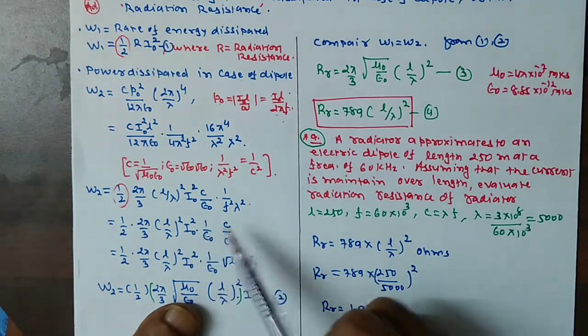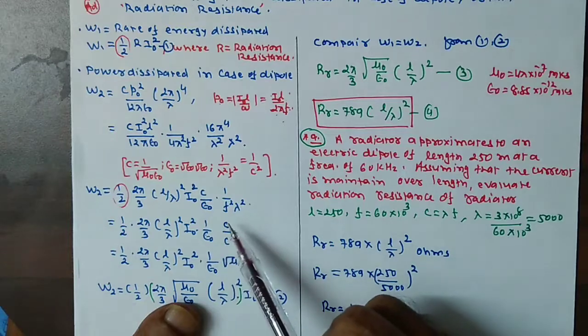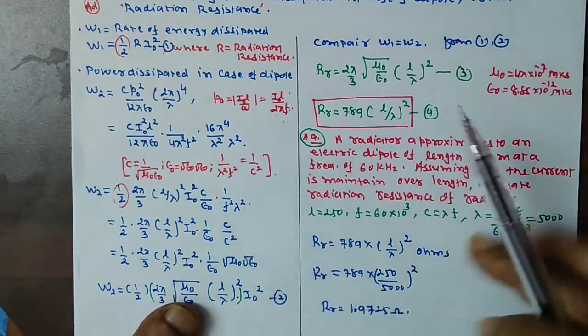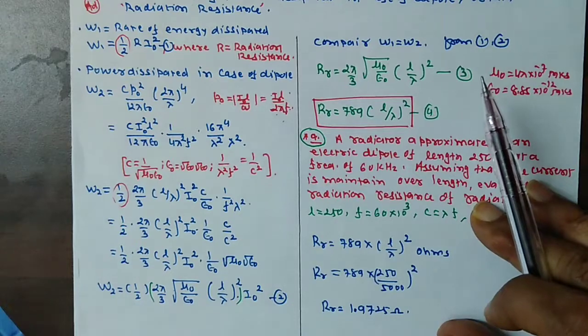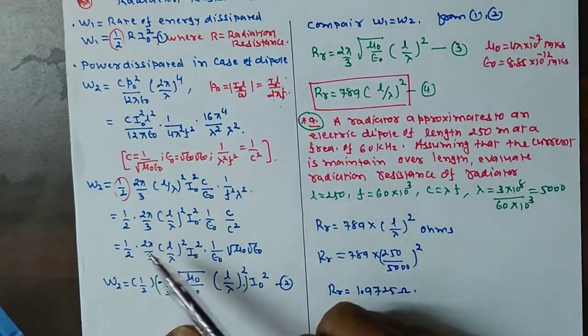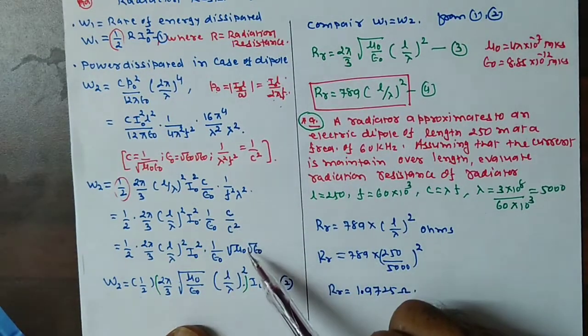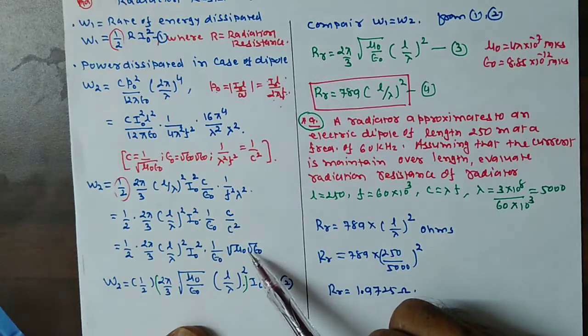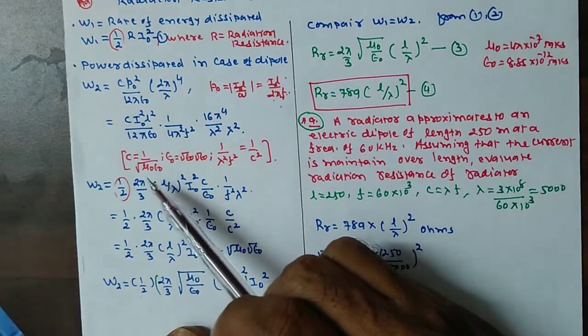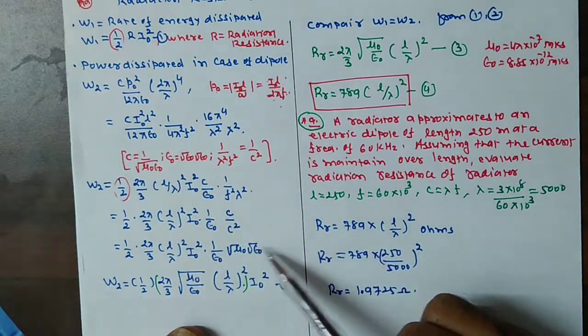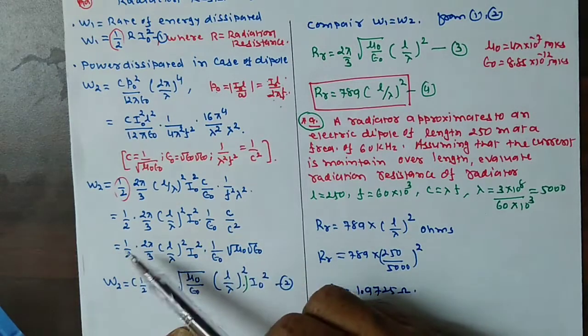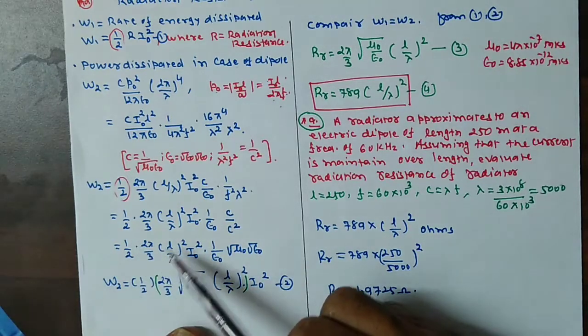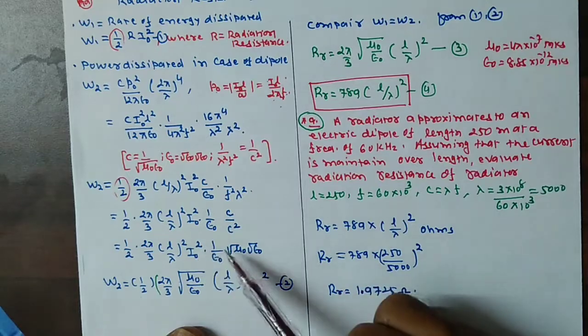This is the same way we have here to simplify. C square, 1 upon c denominator, we will get this. This will be equal to 1 upon c, which is square root of μ0 ε0.